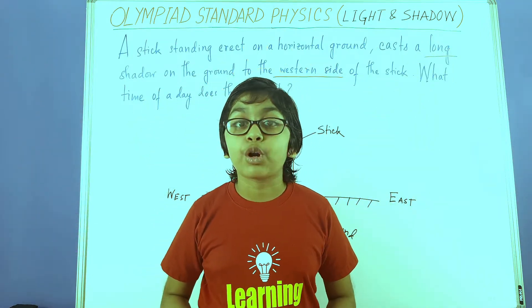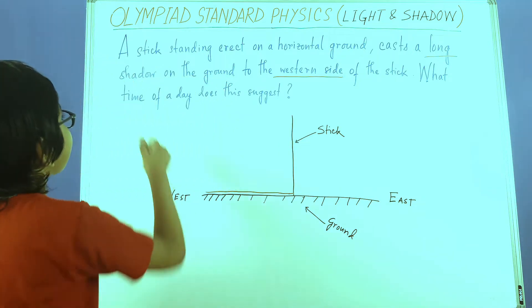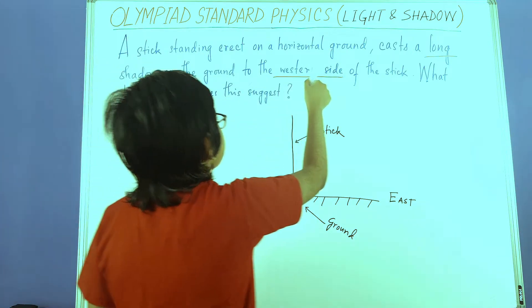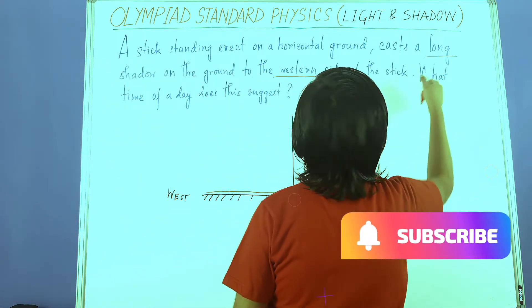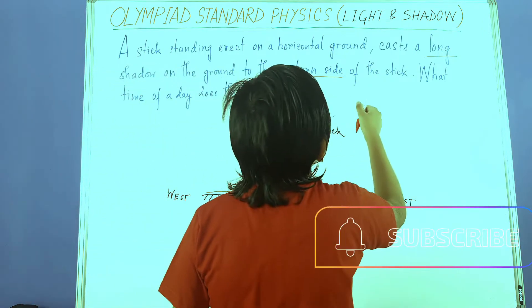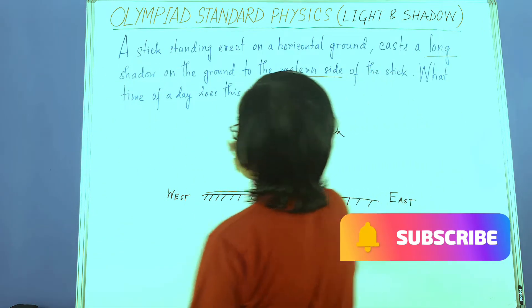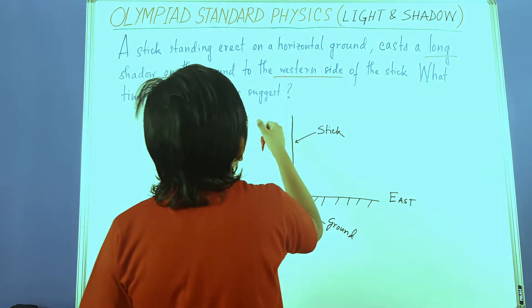I'm going to read the question before we can begin. A stick standing erect on horizontal ground casts a long shadow on the ground to the western side of the stick. What time of the day does this suggest?